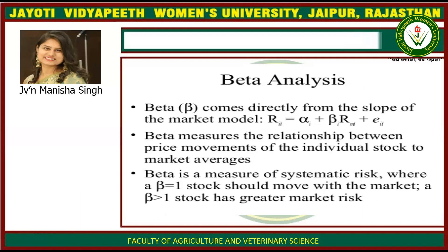Beta analysis: beta comes directly from the slope of the market model. Beta measures the relationship between the price movements of an individual stock and the market averages. Beta is a measure of systematic risk. If beta equals 1, the stock should move with the market. If beta is greater than 1, the stock has greater market risk.